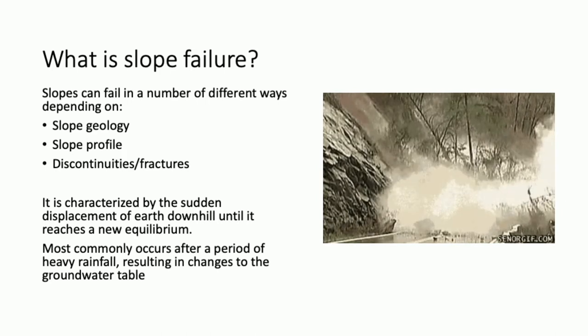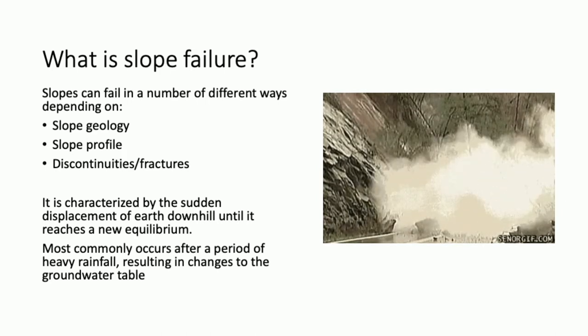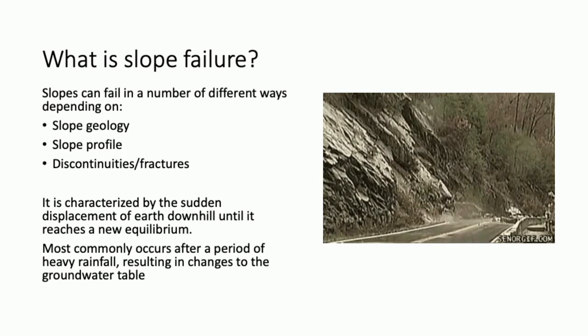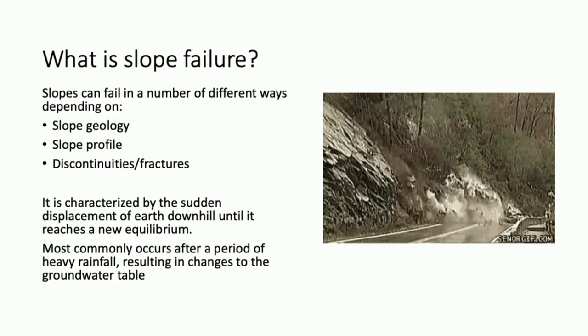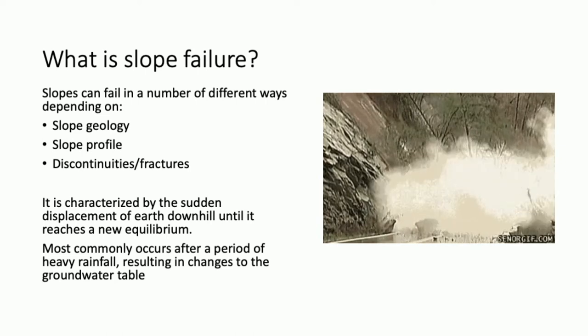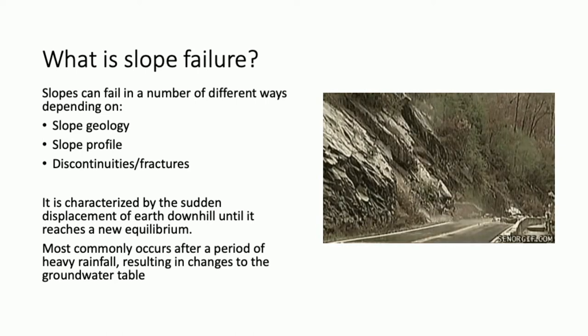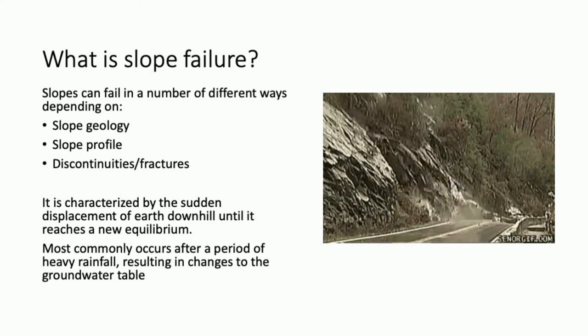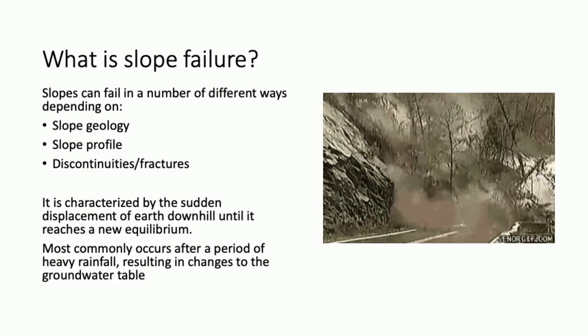Slopes can fail in different ways depending on slope geology, profile and if there are any fractures within the earth. However, when failure occurs, it is sudden, typically without many warning signs. If a slope is susceptible, then failure usually occurs after a period of heavy rain, which results in changes to the groundwater table.